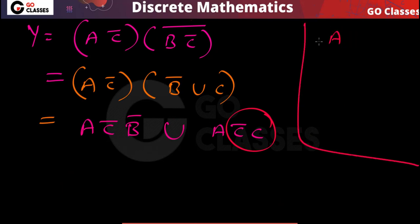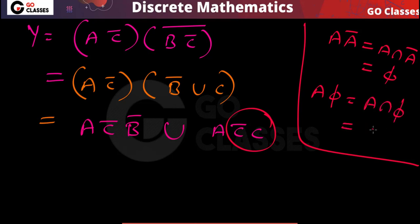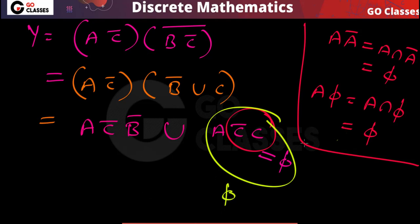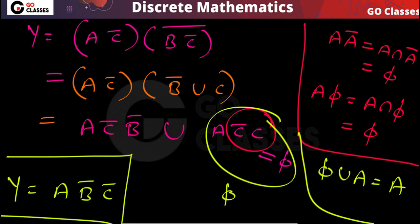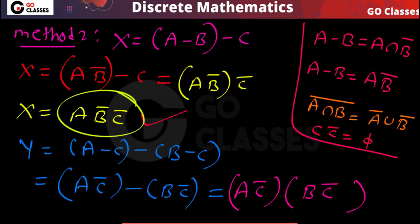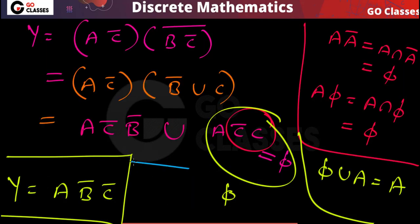Now C intersection C-bar is phi, so the second term becomes phi. And phi intersection A is phi, so that term is phi. Then phi union (A∩C-bar∩B-bar) equals A∩B-bar∩C-bar. So Y equals A∩B-bar∩C-bar, which is the same as X. Therefore X equals Y — confirmed by Method 2.